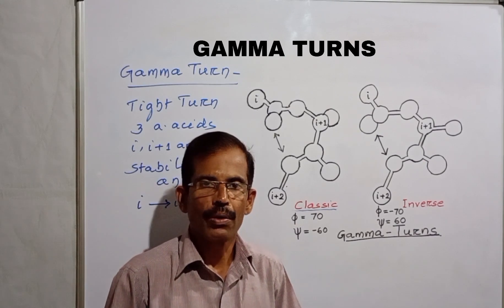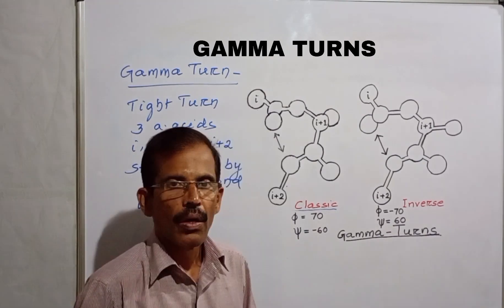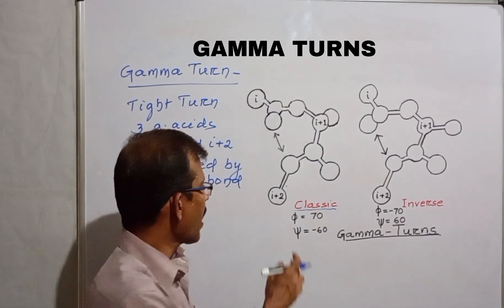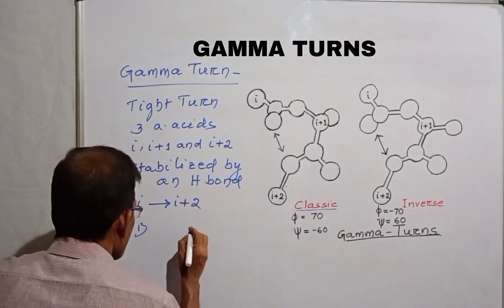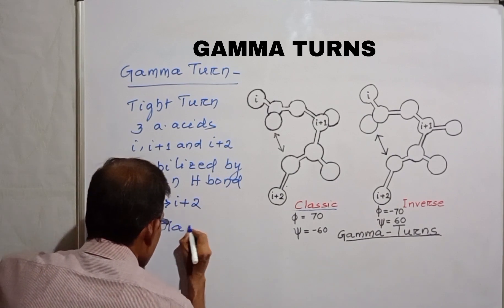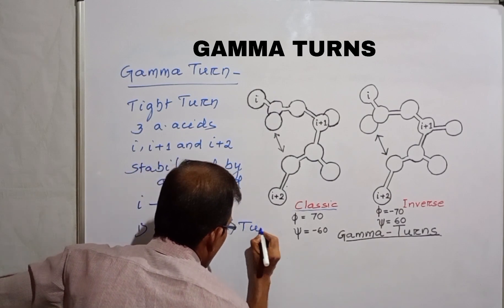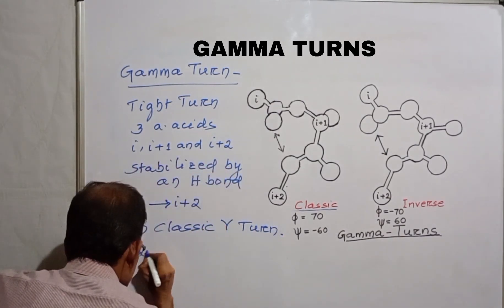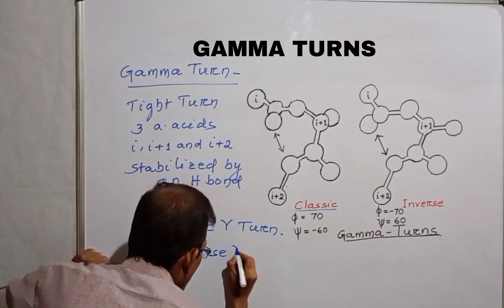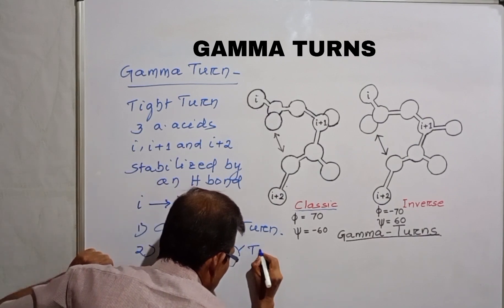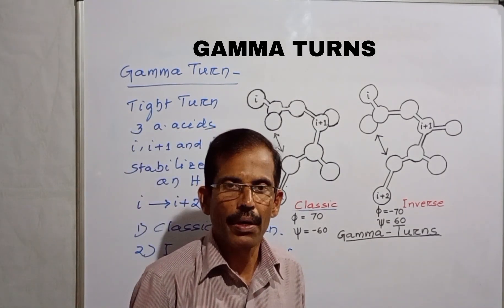They are usually found in the ligand binding site or the active site. On the basis of dihedral angles, Phi and Psi of the middle residue, Gamma Turns are classified into two different groups, such as Classic Gamma Turns and Inverse Gamma Turns. Classic Gamma Turns are far less common in proteins.